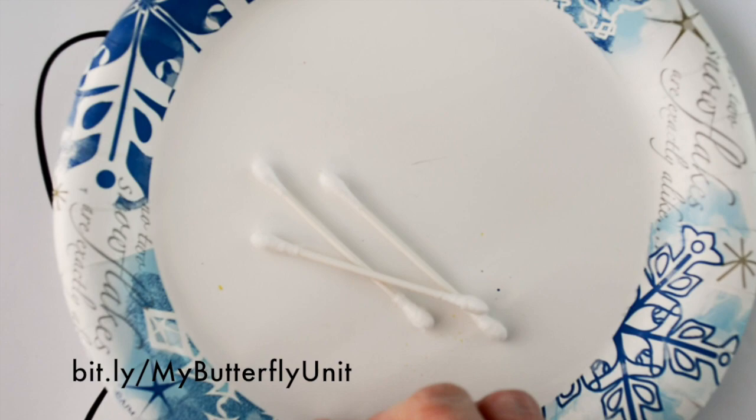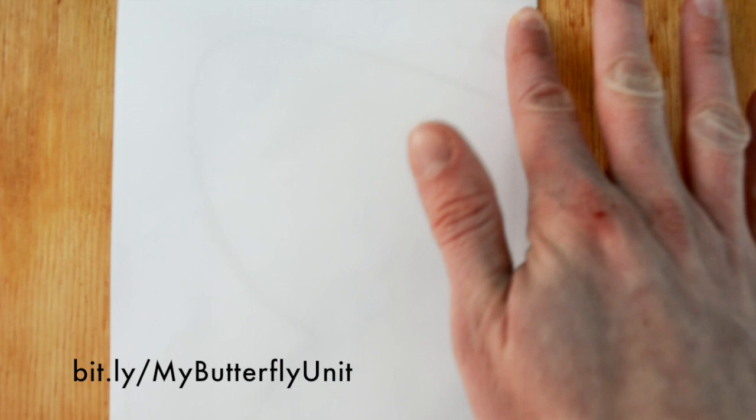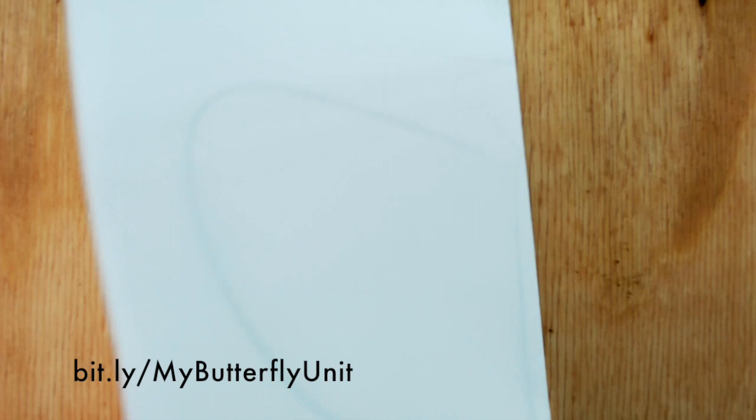Okay, so once the paint is all set up then I give my kids these butterfly symmetry sheets. And before I give the sheets to them what I do is I fold it in half because I've only ever done this with kindergartners and they can't really fold things in half very well yet. So they get these pre-folded sheets.